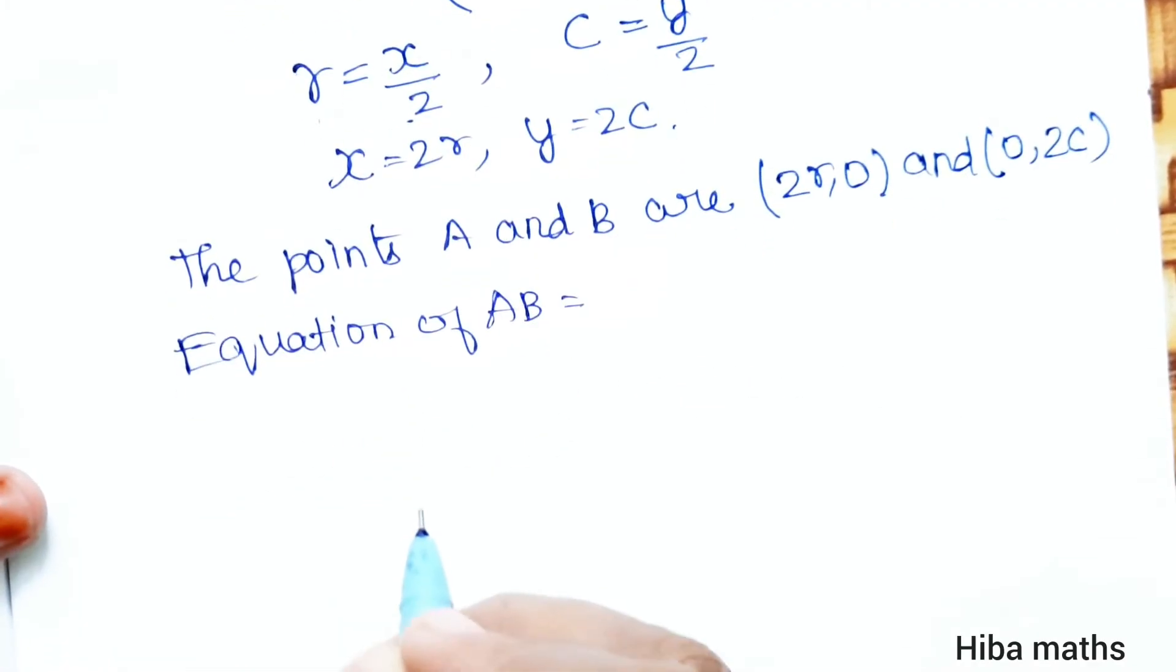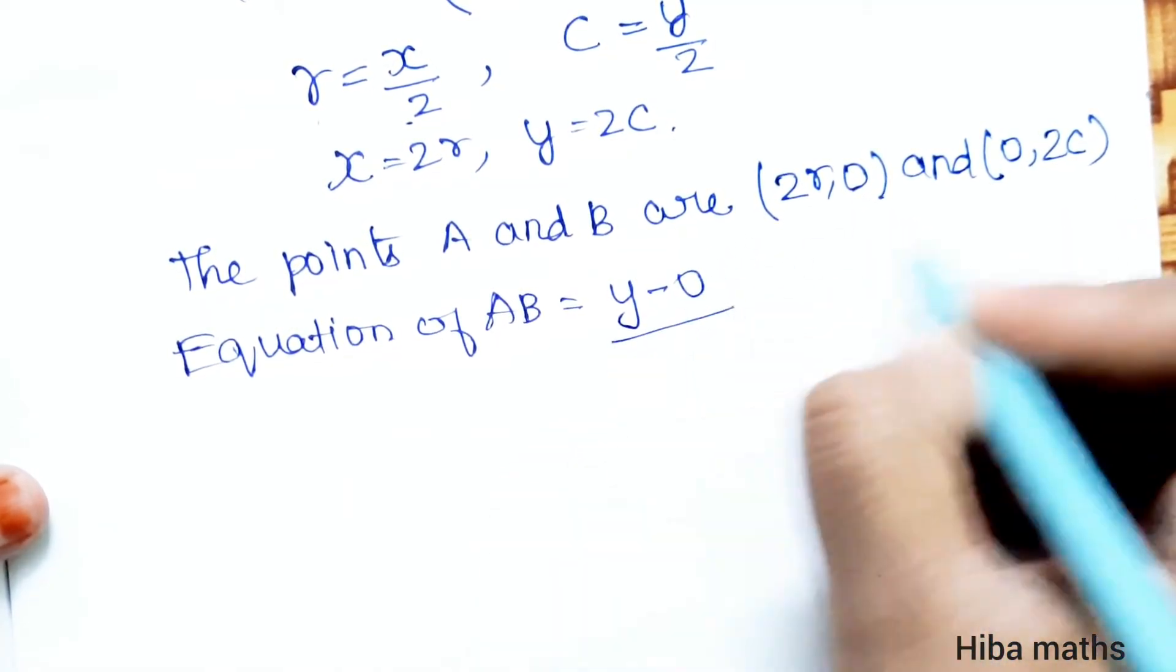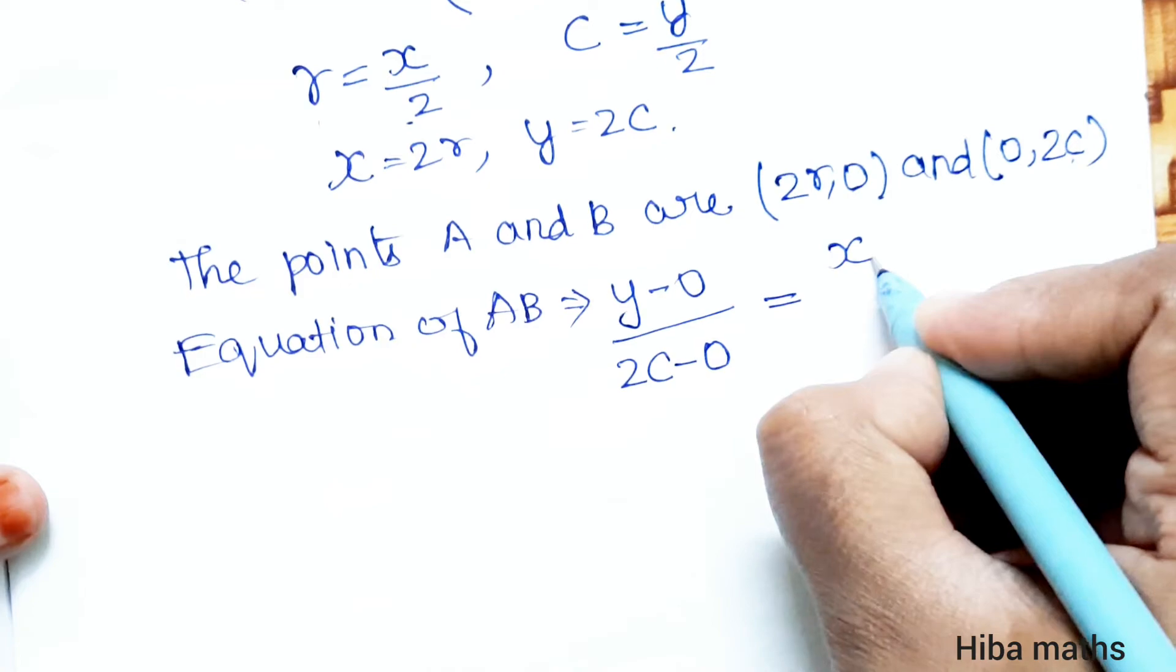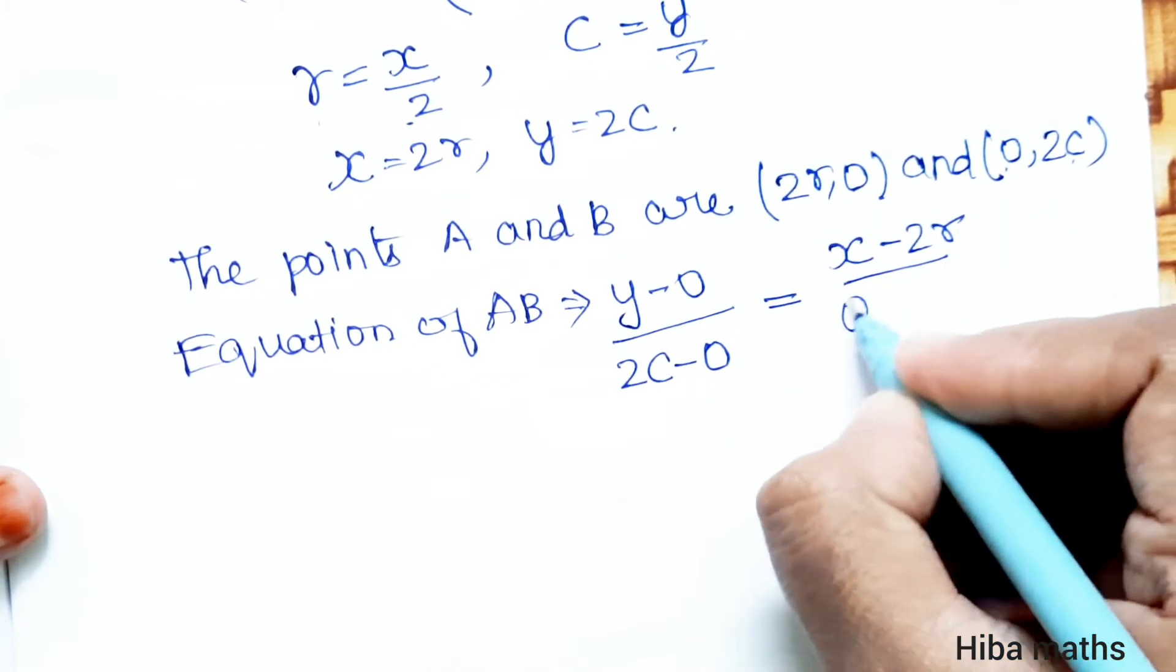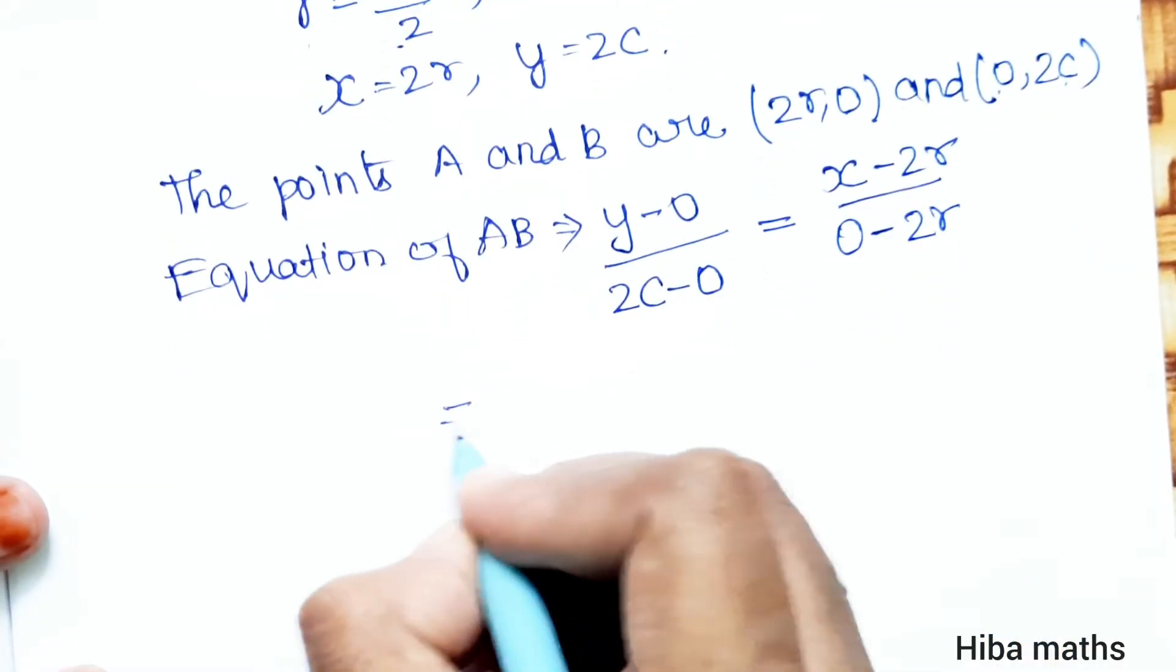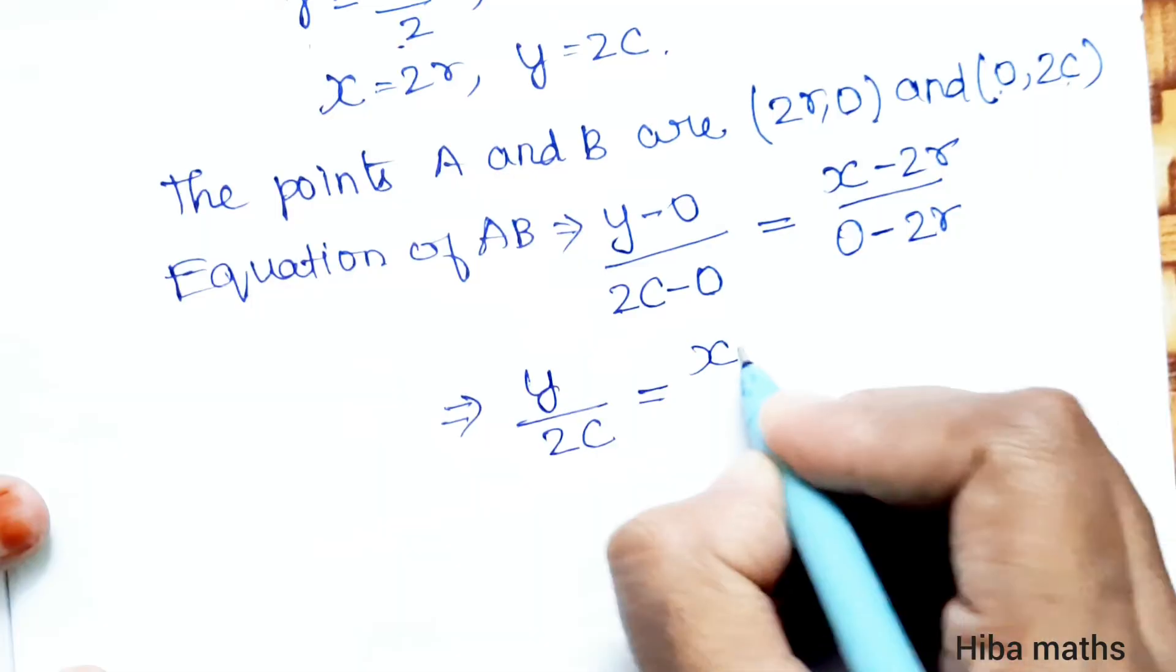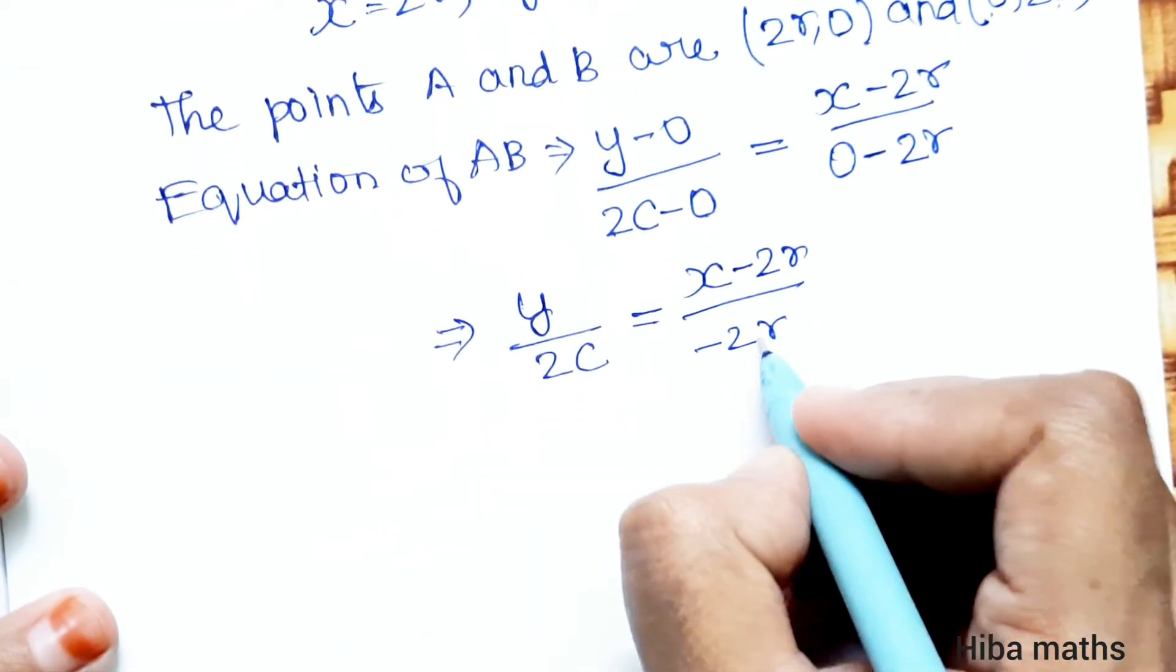Using the two-point formula: (y minus y1) divided by (y2 minus y1) is equal to (x minus x1) divided by (x2 minus x1). So (y minus 0) over (2c minus 0) equals (x minus 2r) over (0 minus 2r). Cross multiply.